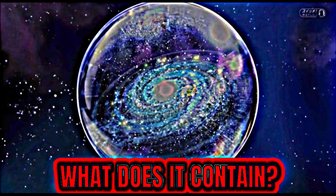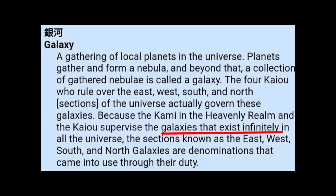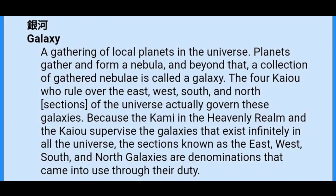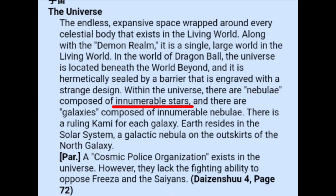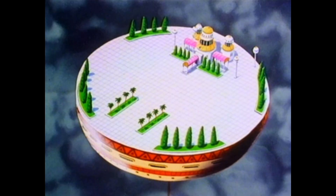Now what does the universe contain? According to Daizenshuu 7 it has galaxies that exist infinitely. These galaxies contain solar systems that are galactic nebulae — a galaxy is formed by a collection of these nebulae, and each nebula has an innumerable number of stars.